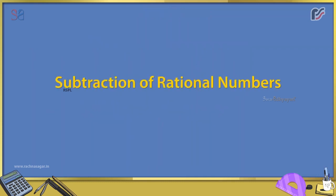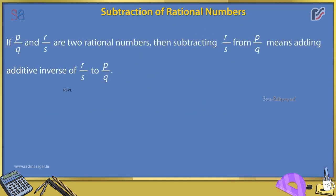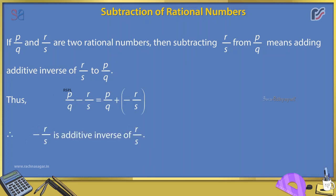Subtraction of Rational Numbers: If P/Q and R/S are two rational numbers, then subtracting R/S from P/Q means adding the additive inverse of R/S to P/Q. Thus, P/Q - R/S = P/Q + (-R/S), because -R/S is the additive inverse of R/S.